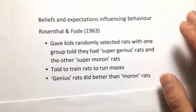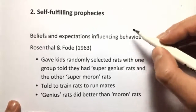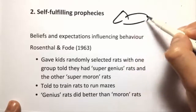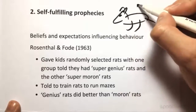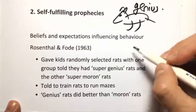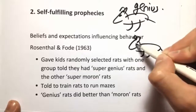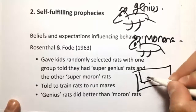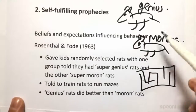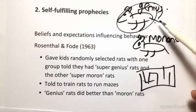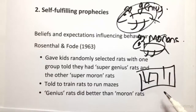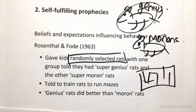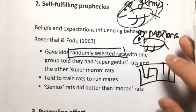Here's a great study that illustrated that. They gave two different groups of kids two different types of rats — well, it seemed that way to them. They told one group the rats were geniuses, and the other group that their rats were morons, really dumb rats. Then they were told to train them running mazes. Those who were told their rats were geniuses trained the rats to do better than those told they were stupid, even though the rats were randomly selected — there was nothing actually different about them.